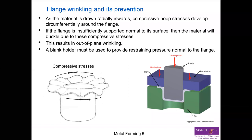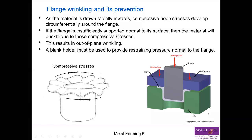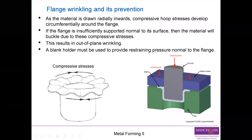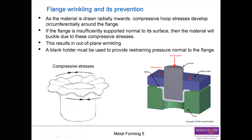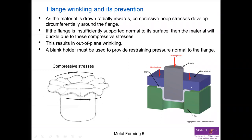Here you can see the whole setup. We can see the blank being pushed using the punch into shape, the die that gives shape to the blank, and the blue part is the blank holder. The red arrows demonstrate the holding force that can be applied. Imagine this piece of material attempting to buckle upwards — the blank holder stops it by pushing down.